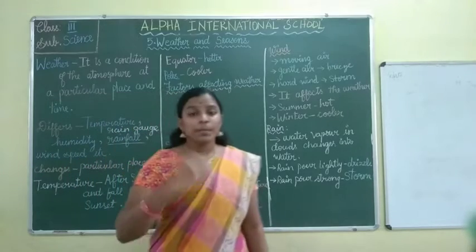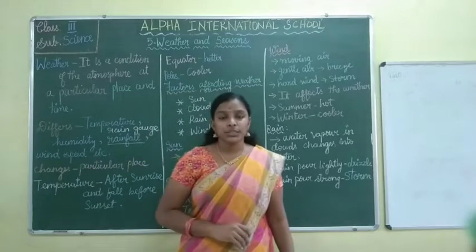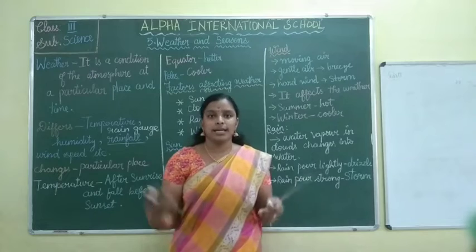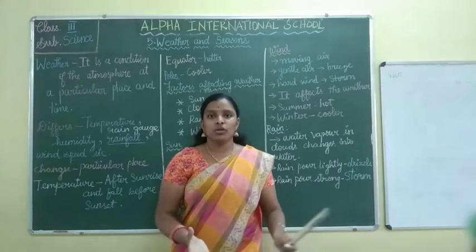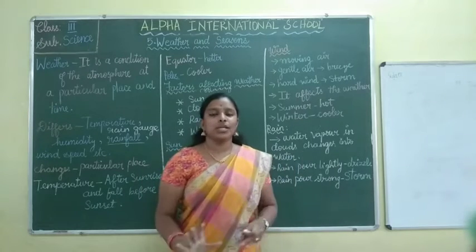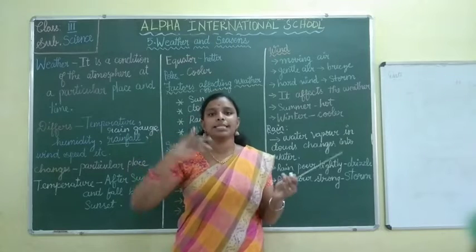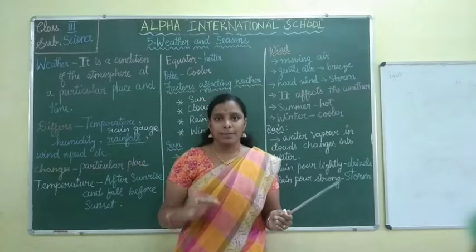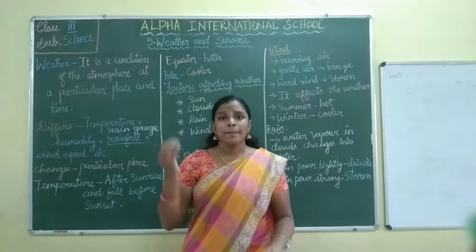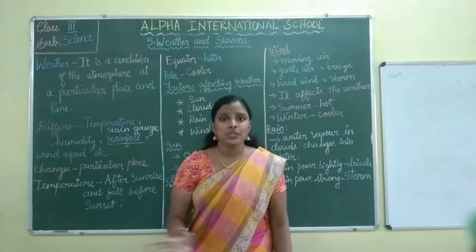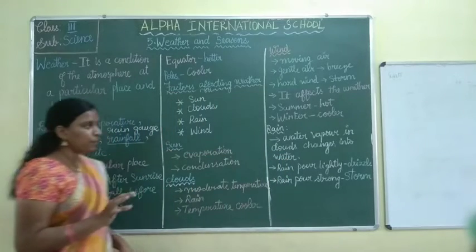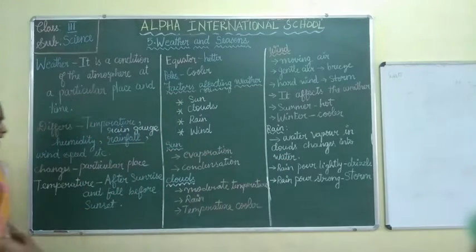Today you will see in the news — for today, some amount of centimetres has rained. It is 5 centimetres — they will say this because of the instrument, the rain gauge. Rain gauge is an instrument to measure the rainfall.